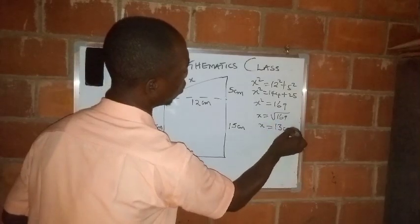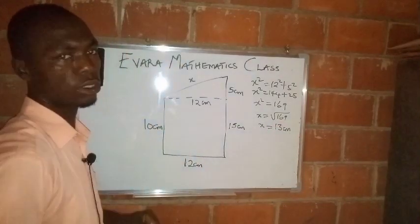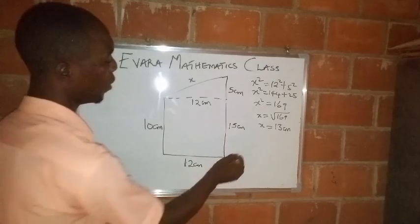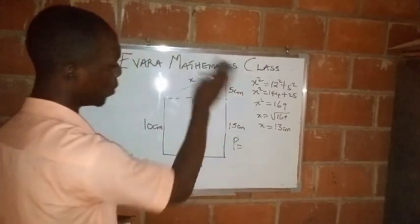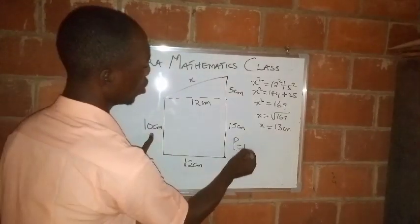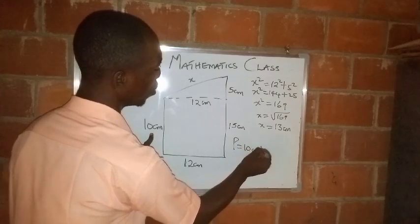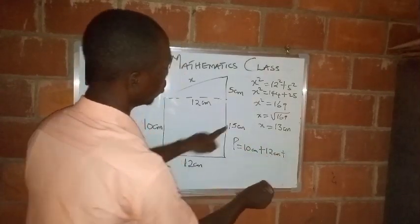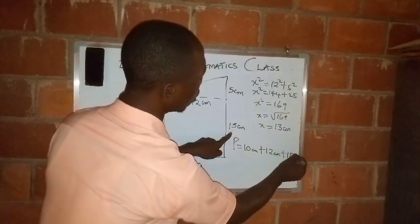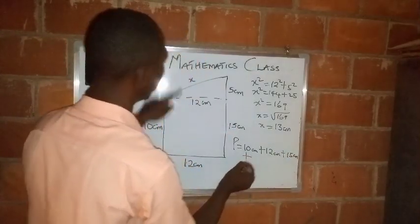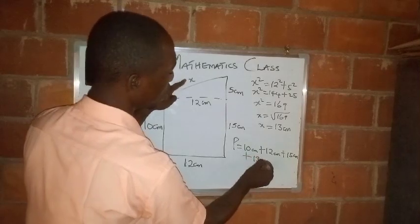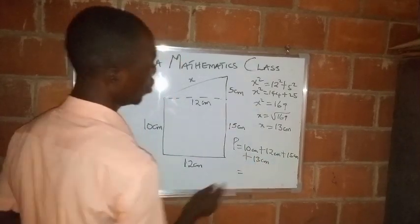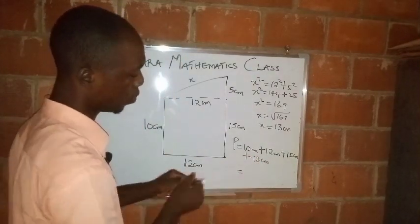So the value of x is 13 centimeters. The perimeter of this whole shape now will be 10 centimeters plus 12 centimeters plus 15 centimeters plus here 13 centimeters.